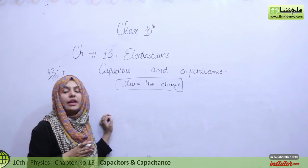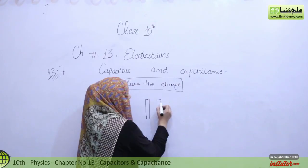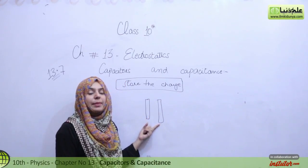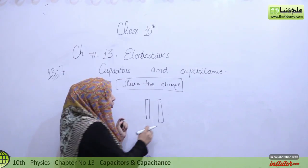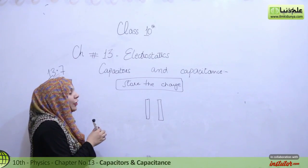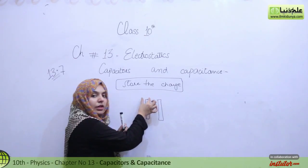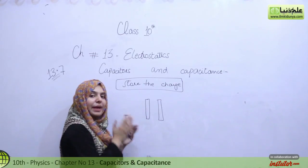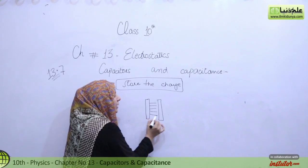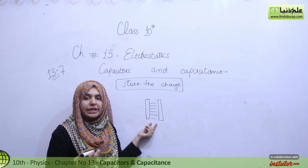What is a capacitor made of? These are two plates — metal plates. These are parallel plates, and they are very thin metal plates. I have drawn them thick, but they are very thin. There are two parallel plates, and there is a medium between them. The air can also be used as the medium, or a thin sheet or film can also be used.